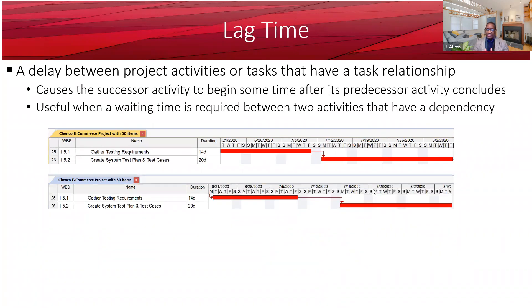Lag time, on the other hand, is a delay between project activities or tasks that have a relationship. A lag time will cause the successor activity to begin sometime after its predecessor activity concludes. It is useful when a waiting time is required between two activities that have a dependency.